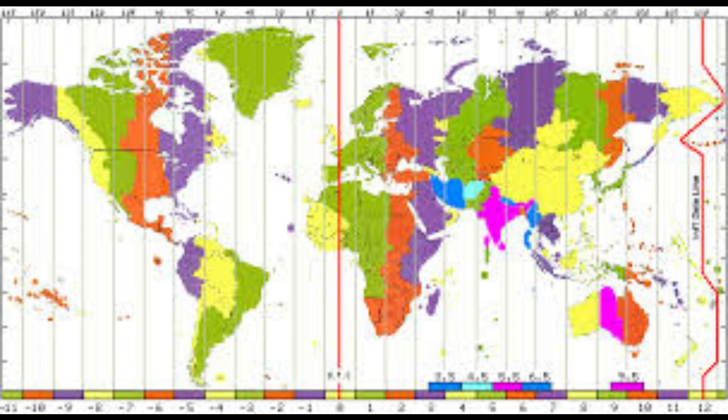Some countries have great longitudinal extent and therefore have more than one standard time. France has 12 time zones; Russia and the USA each have 11 time zones; Australia, Antarctica, and the UK have 9 time zones; Canada has 6 time zones; Denmark and New Zealand have 5 time zones. Read the chapter thoroughly and try to understand the concept. Thank you.